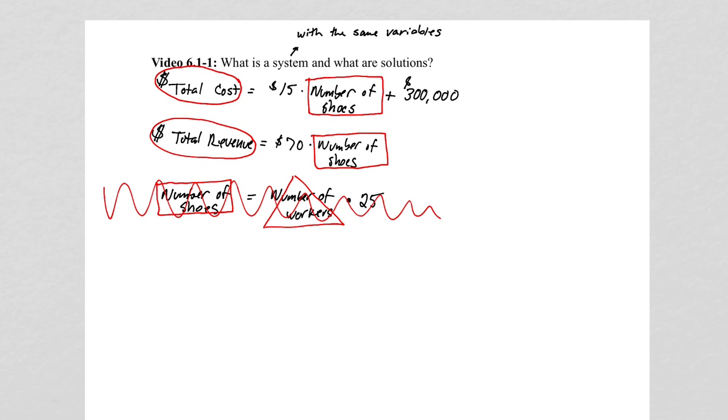However, if we cross this one out and we just look at the first two equations, we can make that a system of equations. And what we generally do is instead of writing the variables out, just because that takes a little bit too much time, we usually use x's and y's. And x's represent our independent variable and y's, our dependent variable.